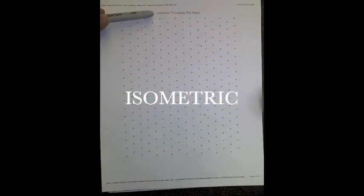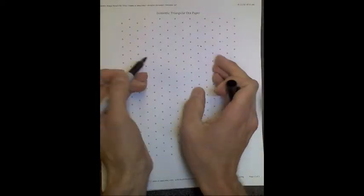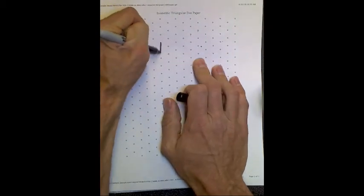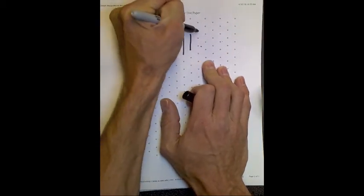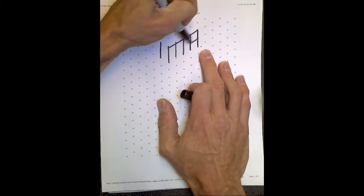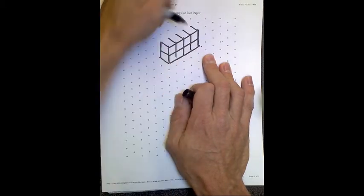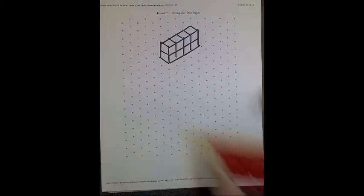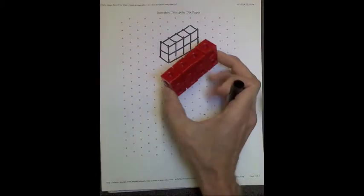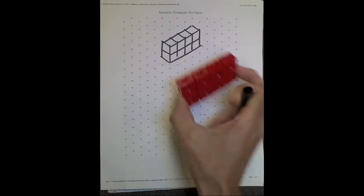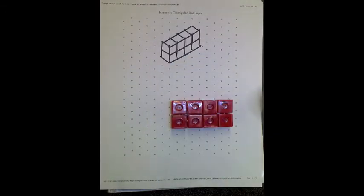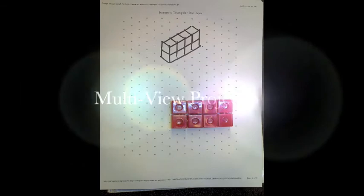Before we begin, let's look at some vocabulary. Isometric is one word you need to be familiar with, and an isometric view is an angled view of an object. Here I have what's called isometric paper. There's dots spaced apart just right so that you could draw an angled view, an isometric view of an object. Now this shape can be drawn from three different views, or three views is what's preferred, and that's called a multi-view projection.